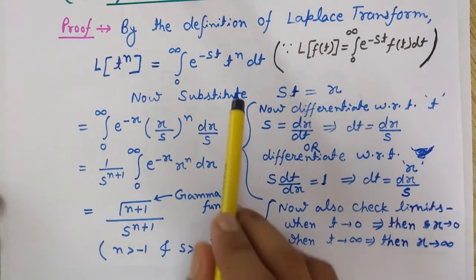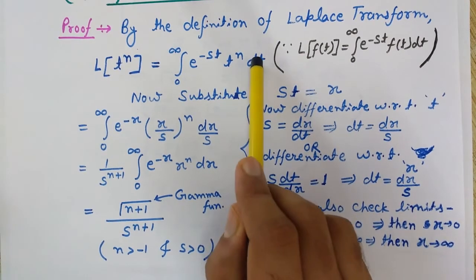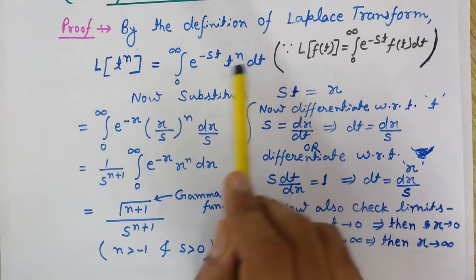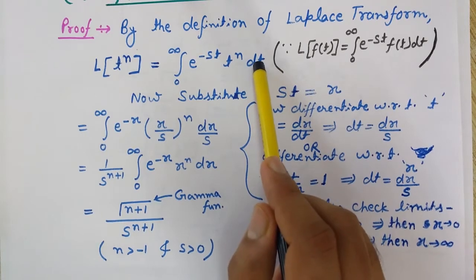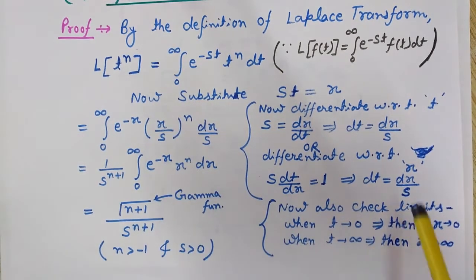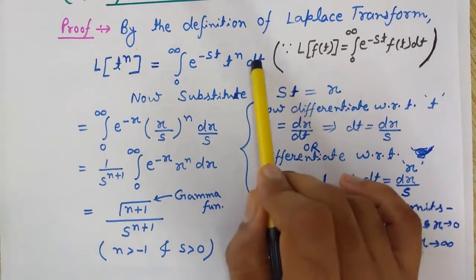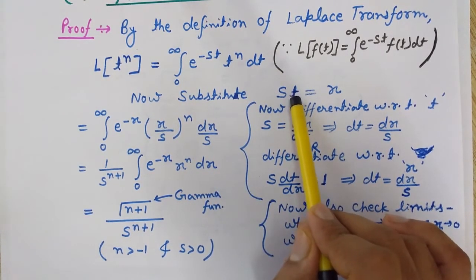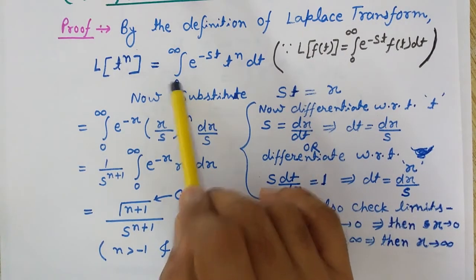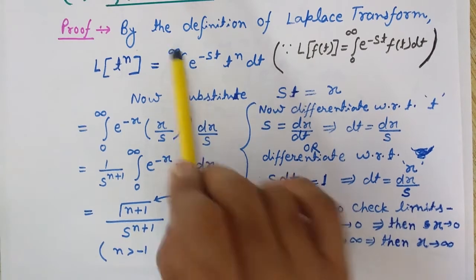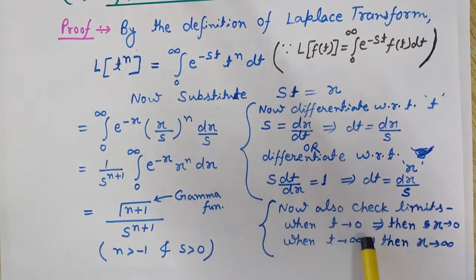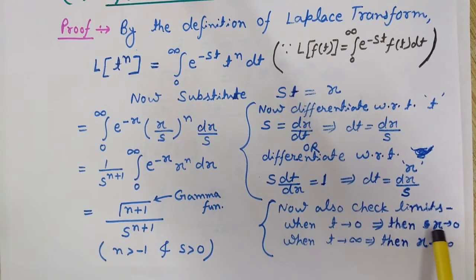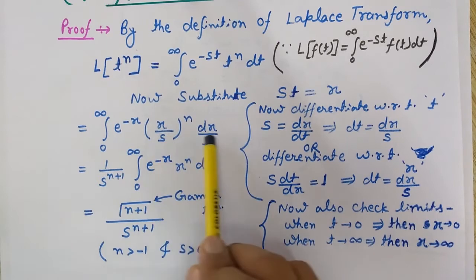Now, the limits of integration are in terms of t, going from t equals 0 to infinity. We need to change them to limits in x. When t equals 0, x equals 0, so the lower limit is 0. When t equals infinity, x equals infinity. So the limits from 0 to infinity remain the same.